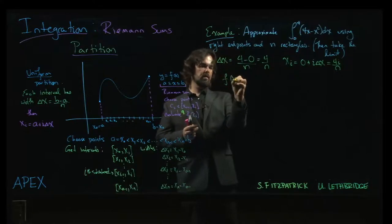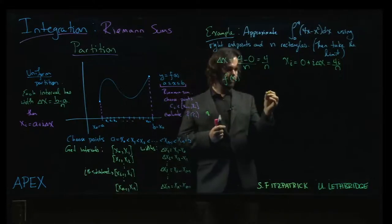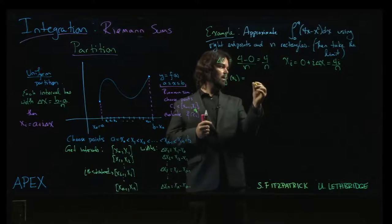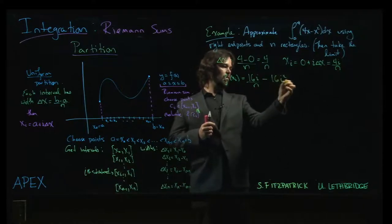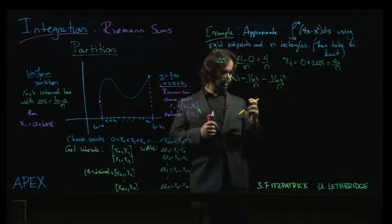So I can calculate f of xi, and I'm going to get 16i over n minus, square that, 16i squared over n squared.